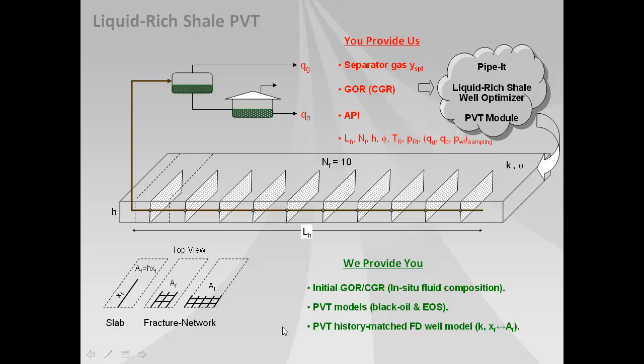Now this PVT history match model will be an excellent starting point for your long-term performance history matching as production data comes in on a monthly yearly basis into the future. And that can then be used for forecasting the liquids oil and condensate yields into the future from that model.